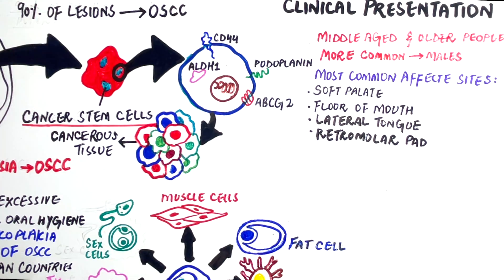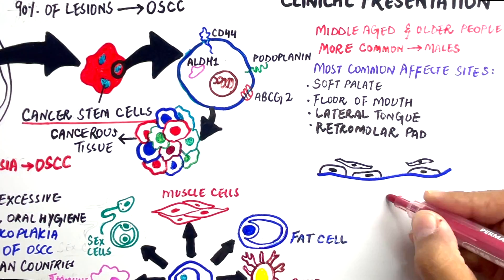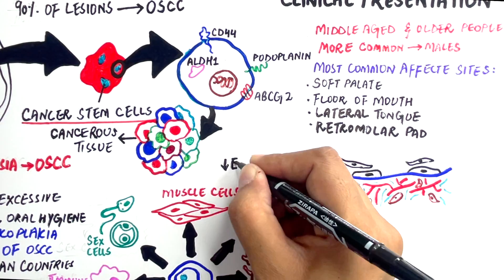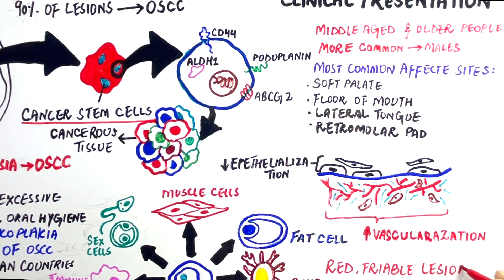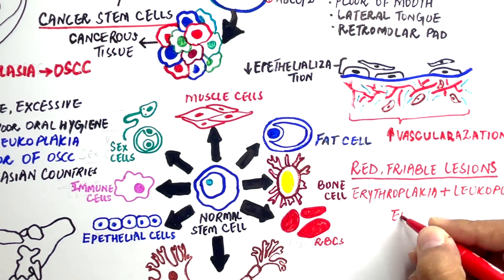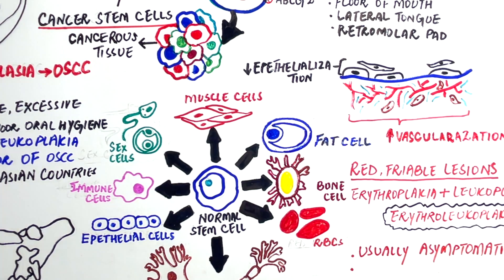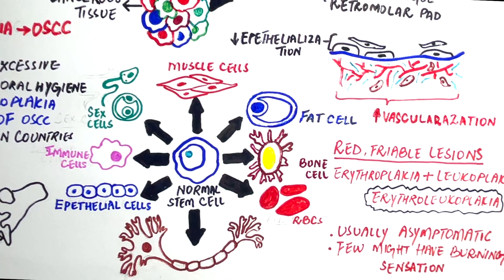The condition is characterized by decreased epithelialization and increased vascularization, resulting in red friable lesions that bleed easily upon scraping. The lesions might appear in association with leukoplakia and are termed erythroleukoplakia. The lesion is usually asymptomatic; however, few patients present with a burning sensation as a symptom.